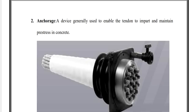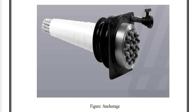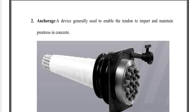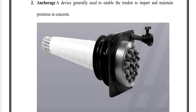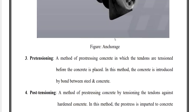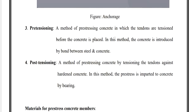The next terminology is anchorage — a device generally used to enable the tendons to impart and maintain pre-stress in the concrete. These tendons, which we can also call wires, are kept in position by the anchorage device, which helps the tendons to impart and maintain the pre-stress in the concrete.